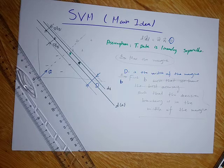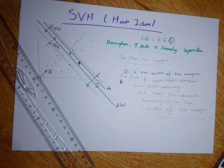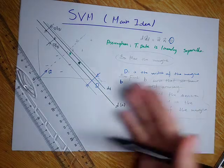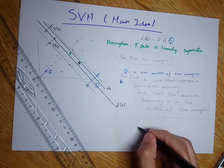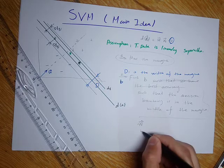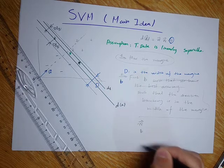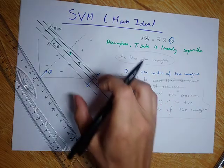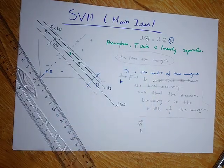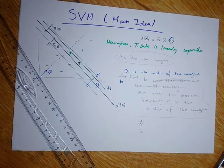That's the idea. In the next video, I will talk about the theory of how we can do this theoretically — how we can find w and b such that we get this type of decision boundary and this type of classifier.